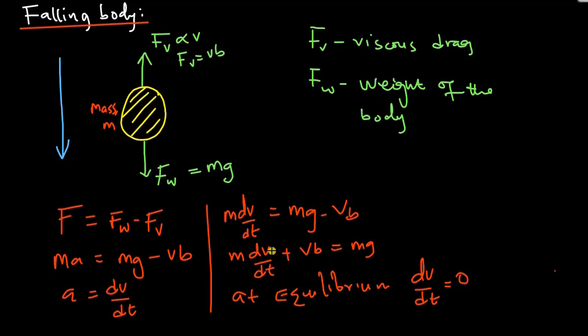So let's substitute 0 for dv/dt. We have Vb equals Mg, and V is Mg divided by b. This special velocity is now known as the terminal velocity. Let me write that as V subscript t.